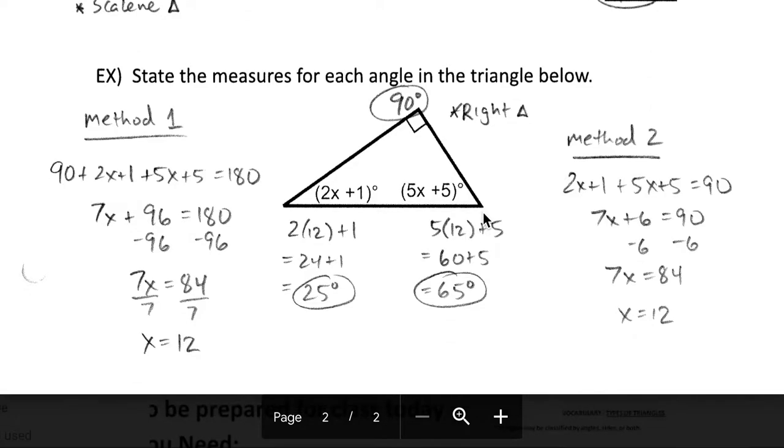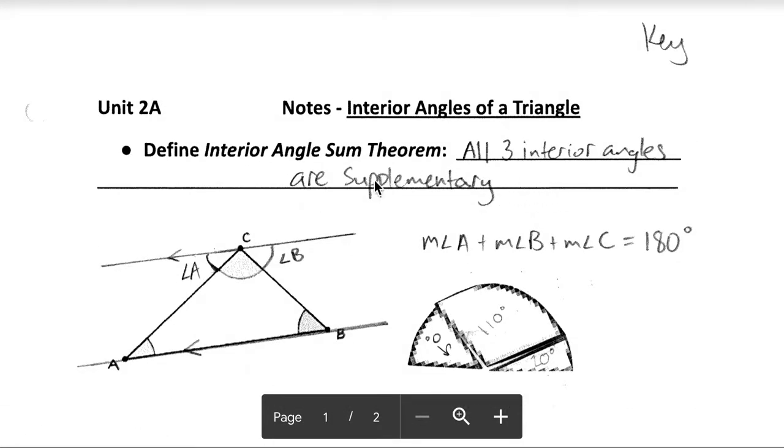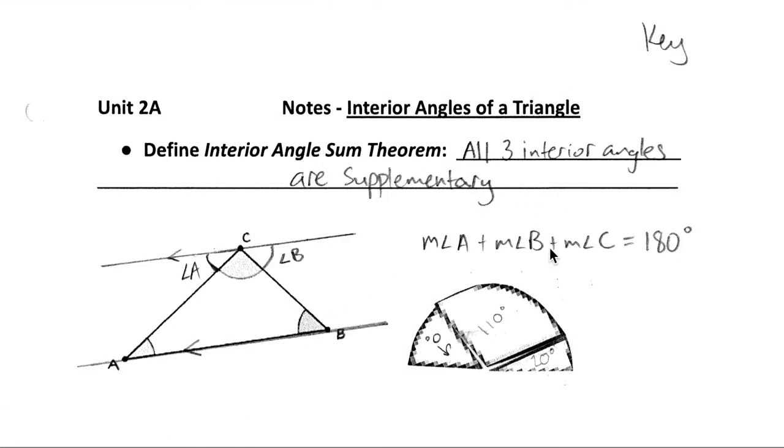There it is. A few examples. Solving for unknown measures in triangles using that interior angle sum theorem, knowing that all three angles are going to add up to 180.